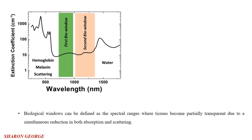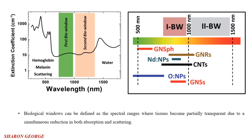Looking at the second picture, we can see the first and second biological windows indicated. It can be seen that most nanoparticles used as photosensitizers operate in the first biological window, but only a few — such as nanorods and carbon nanotubes — operate in the second biological window. For thermal therapy, the use of heating nanoparticles working in the first biological window seems more advantageous than the second biological window. This is because the first biological window is characterized by negligible absorption, so the heating source would be the heating nanoparticle itself.